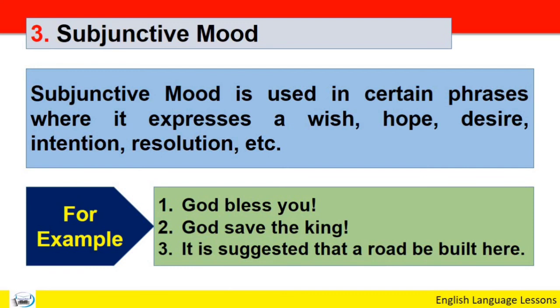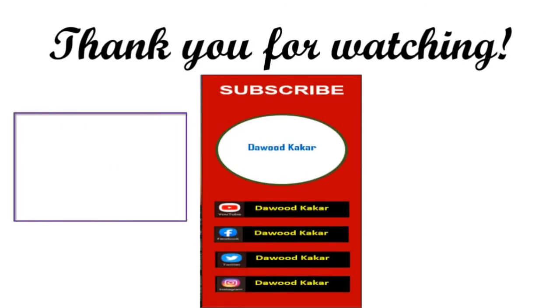To verb ki teen qisam ki halatein, teen verb, teen qisam ke manner, teen qisam ke mode, teen qisam ke andaz mein kisi bhi sentence mein use ho sakta hai jis ko indicative mood aur imperative mood, subjunctive mood kehte hain. Khwastem nasa.